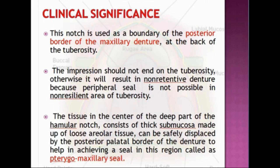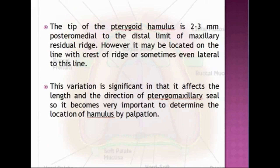The impression should not end on the tuberosity, otherwise it will result in a non-retentive denture because a peripheral seal is not possible in the non-resilient area of the tuberosity. The tissue in the center of the deep part of the hamular notch consists of thick submucosa made up of loose areolar tissue and can be safely displaced by the posterior palatal border of the denture to help in achieving a seal in this region, called the pterygo-maxillary seal.